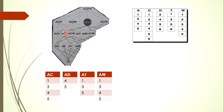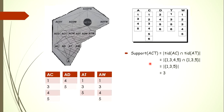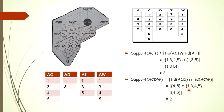To calculate itemset support within a sub-lattice, we need to intersect the TID lists. For example, to calculate the support of itemset ACT, we intersect the TID lists of AC and AT — these are intermediate TID lists stored in main memory. Similarly, to calculate the support of itemset ACDT, we intersect the intermediate TID lists to obtain the support value. This is how we calculate support using vertical TID list intersections within a sub-lattice.